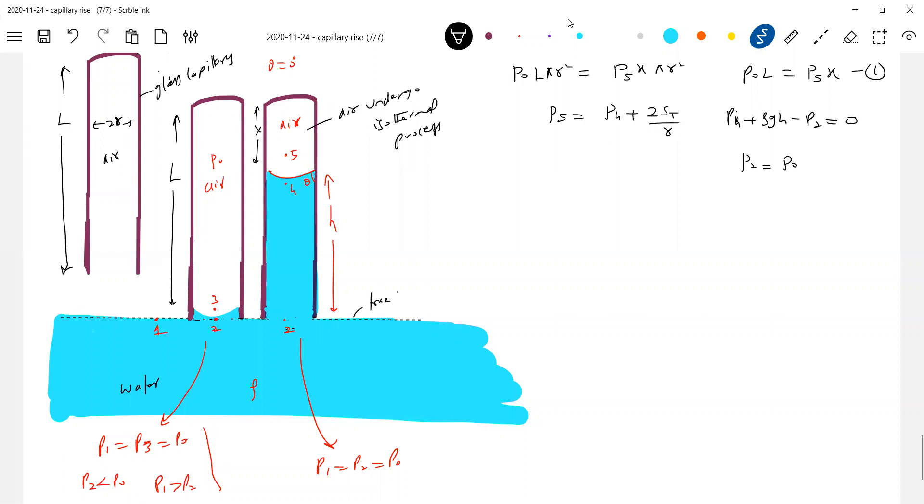Why? Because there's a free surface. Earlier, pressure at 2 was less than P naught. Now, once the liquid rises to certain height, that pressure at 2 will become equal to P naught. Because if you draw a horizontal line, pressure must be same. And what is the pressure at this point? Should be equal to P naught. If you want, write it here as 6. So what is the condition here now? P2 plus P6 should be equal to P naught.